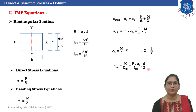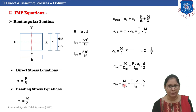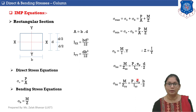Bending stresses in the YY direction develop when eccentricity is in the XX direction. σBy = M/Zyy = P×eX / Iyy × B/2, where B/2 is the maximum fiber distance from the YY neutral axis. Remember all these equations as they are very important for solving numericals.